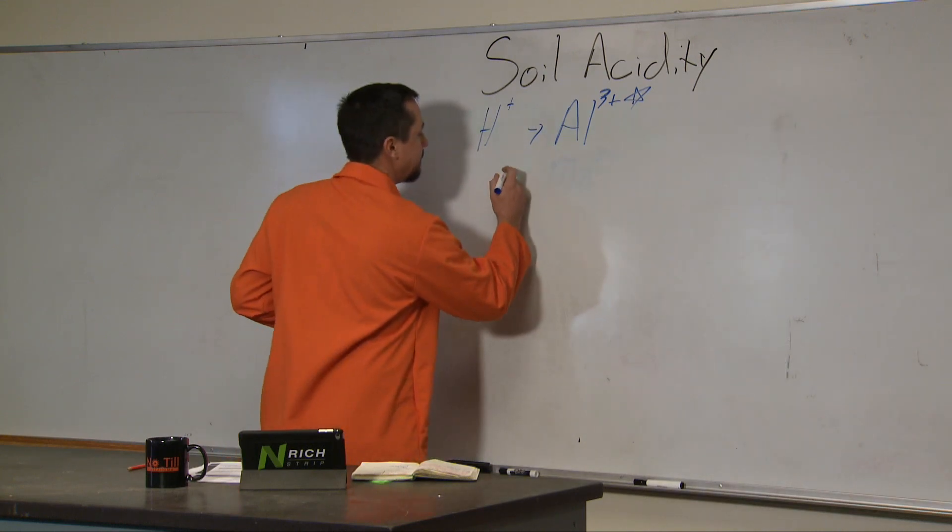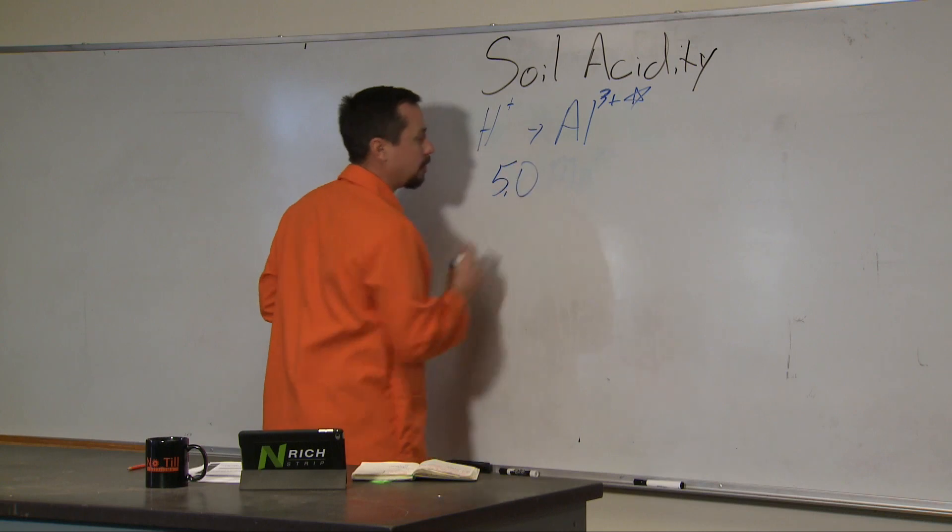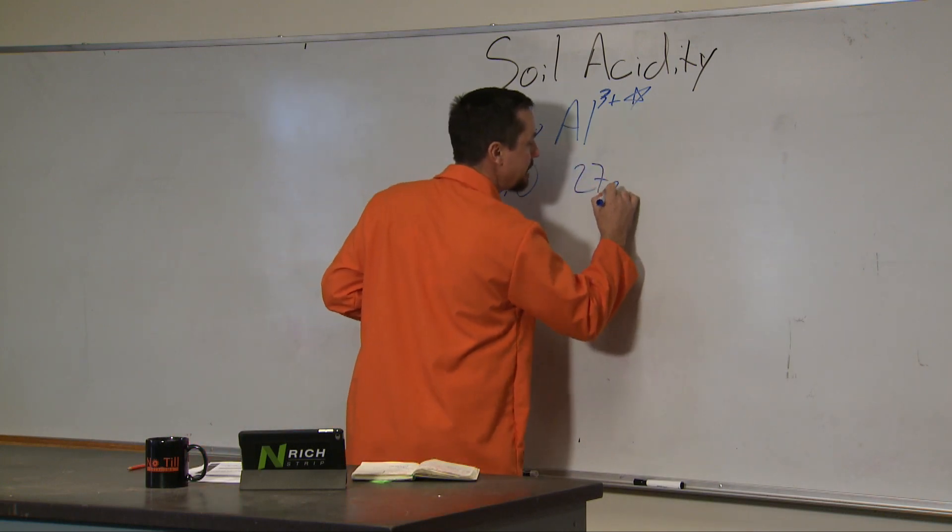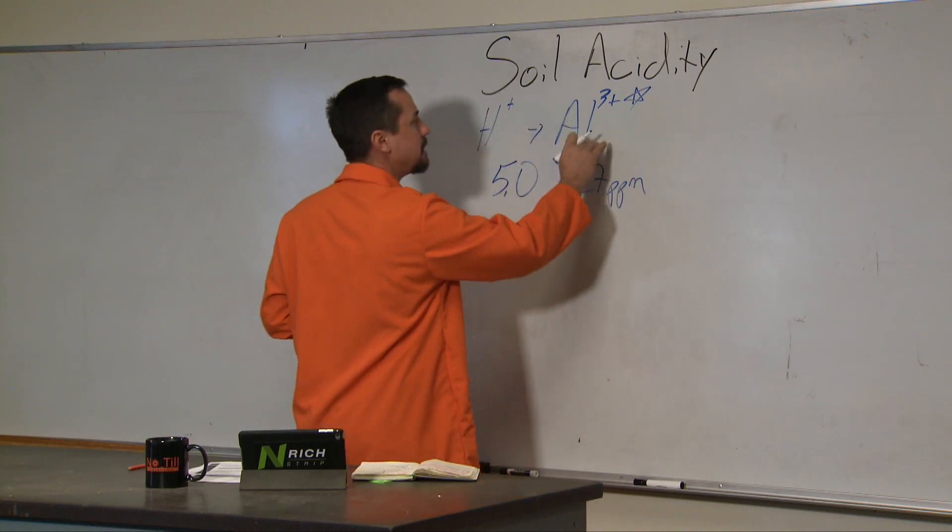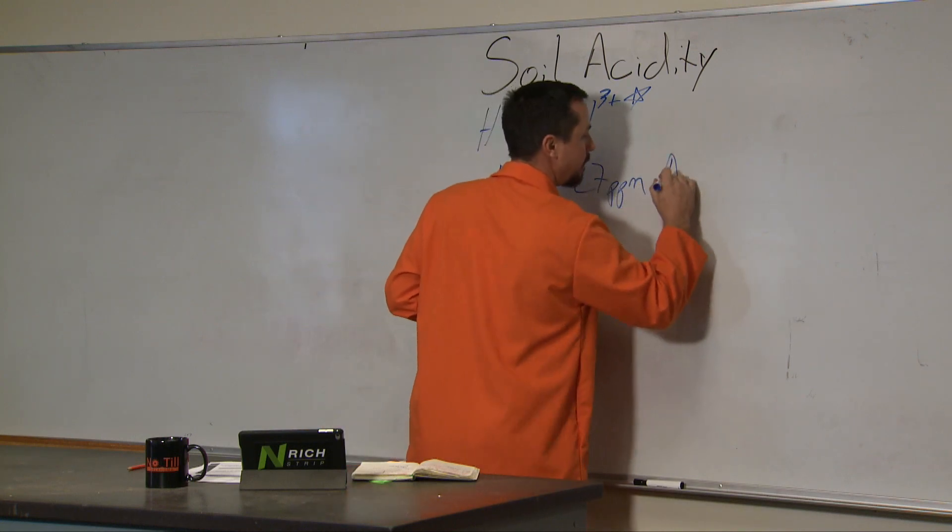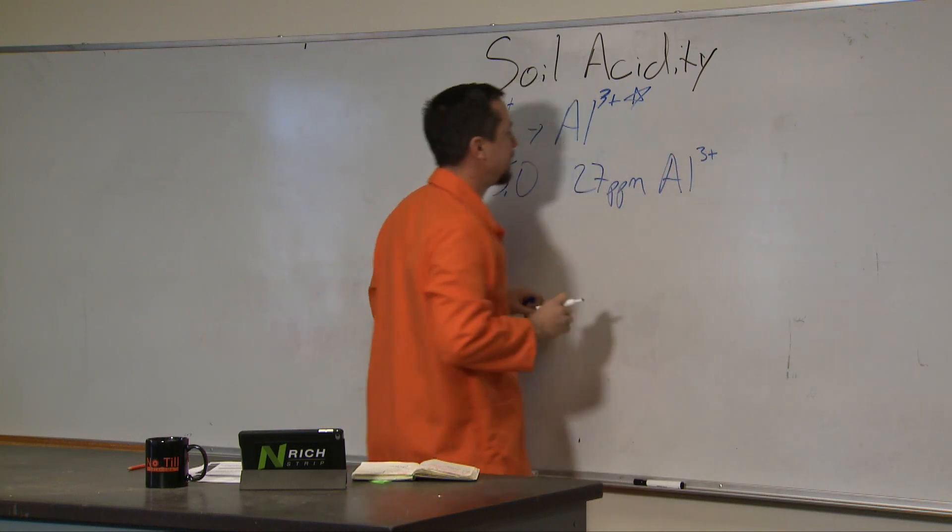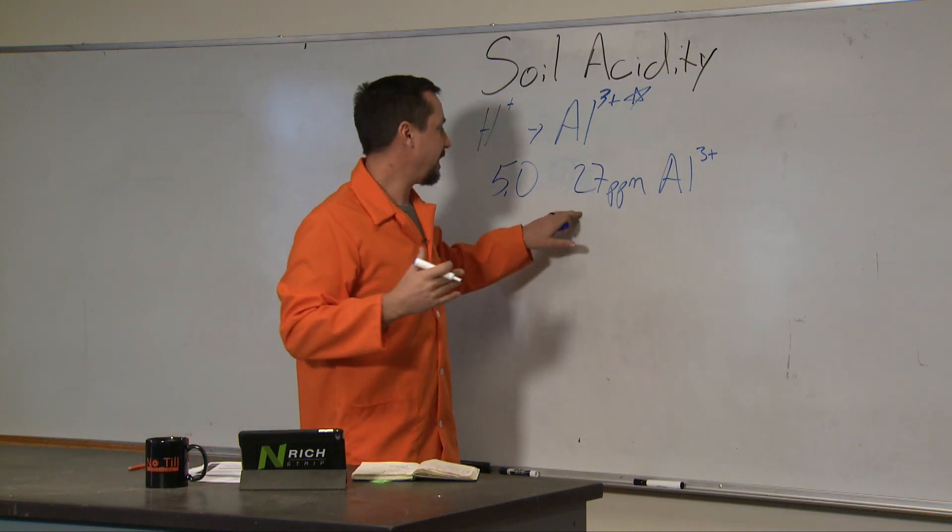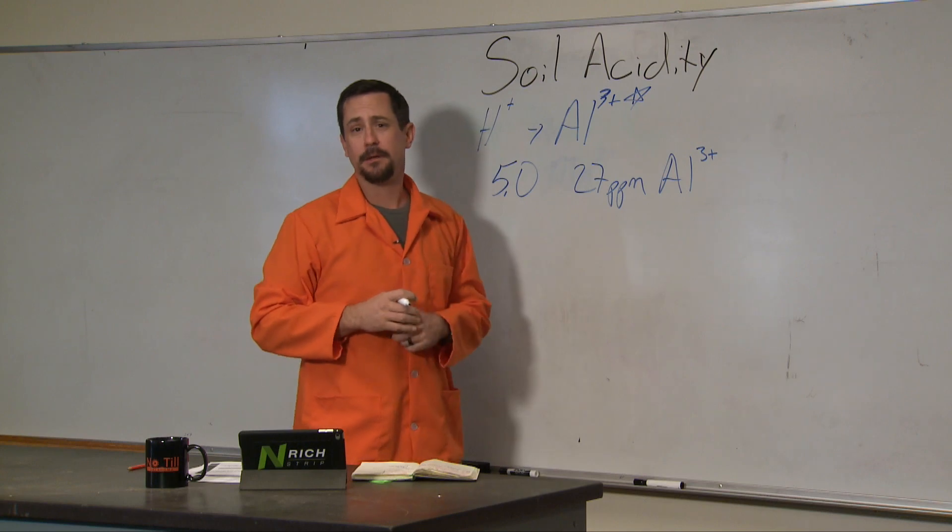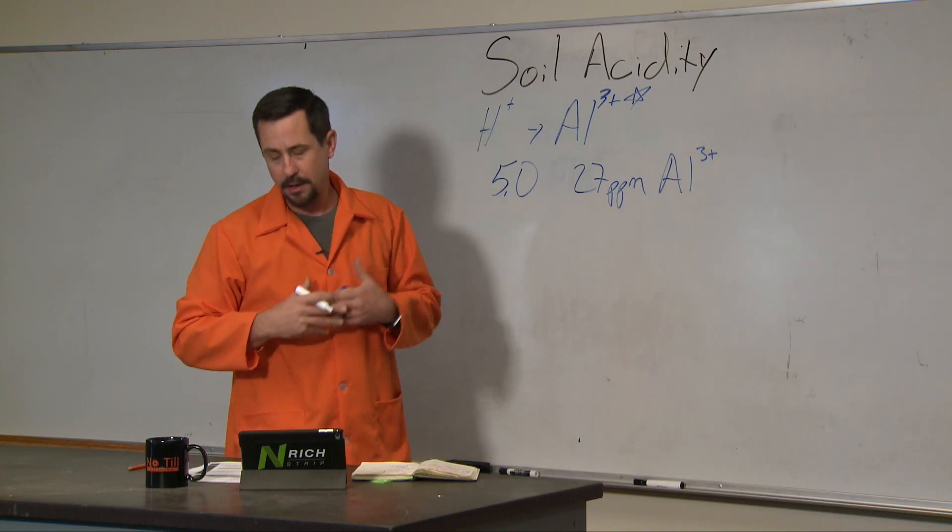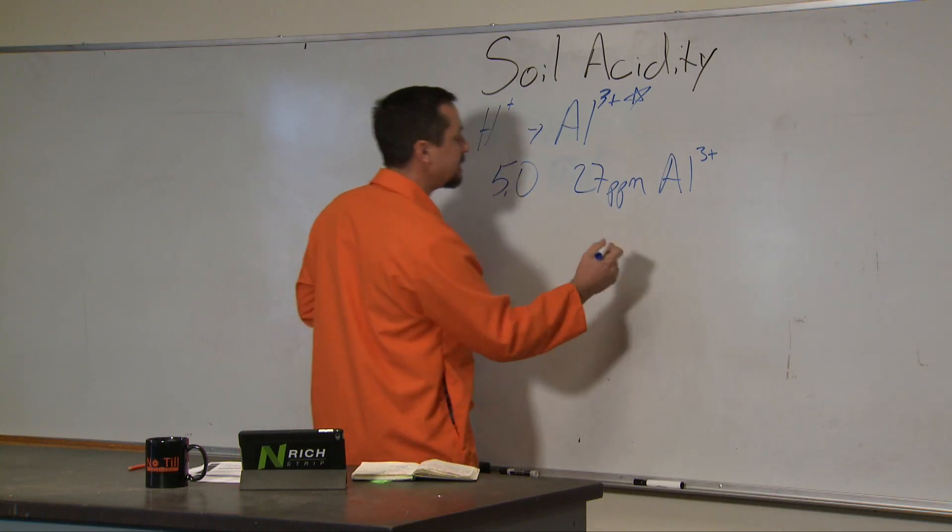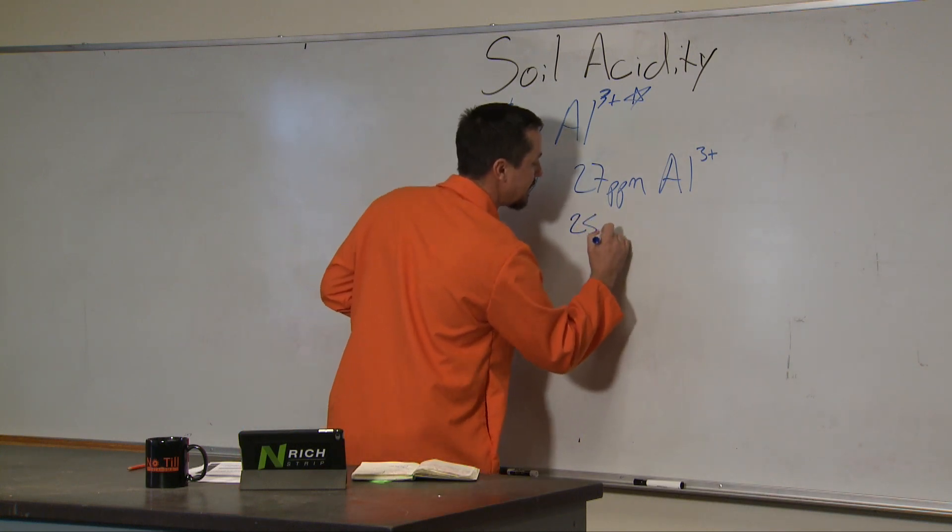At a pH of 5.0, there's approximately 27 ppm (parts per million) of aluminum 3+ in the soil solution. What's critical about that value is that typically most of our crops, especially wheat, are sensitive around the 25 ppm mark.